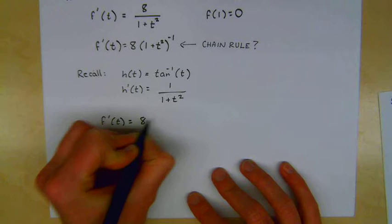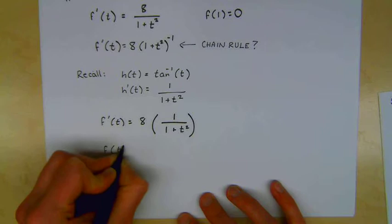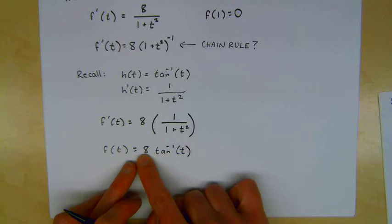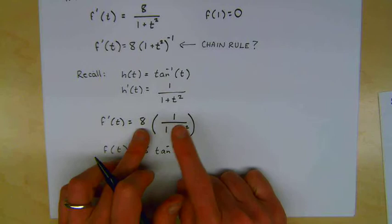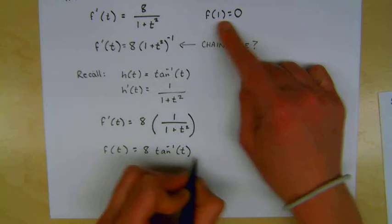And that means that when I look back at this original problem, it's better for me to think of it as 8 times 1 over 1 plus t². Because now I know, aha, when I take the antiderivative, f(t) is just going to be 8 times the inverse tangent of t. And I can check this by going backwards. And this coefficient is just going to stay. The 8 just stays. I don't need to worry about doing some sort of product rule, because it's not a product of two functions of t. It's just a product of something else.